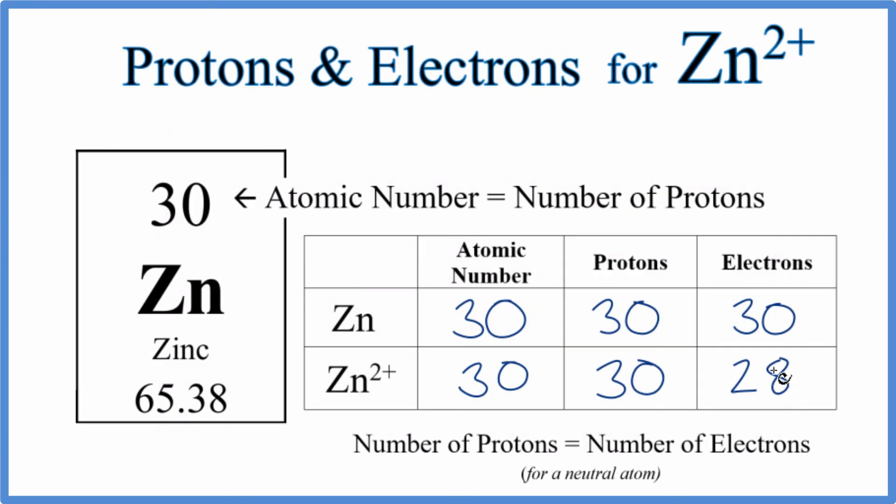If you need help finding the number of neutrons for the different isotopes of zinc, there's a link in the description. This is Dr. B with the number of protons and electrons for Zn²⁺, the zinc ion. Thanks for watching.